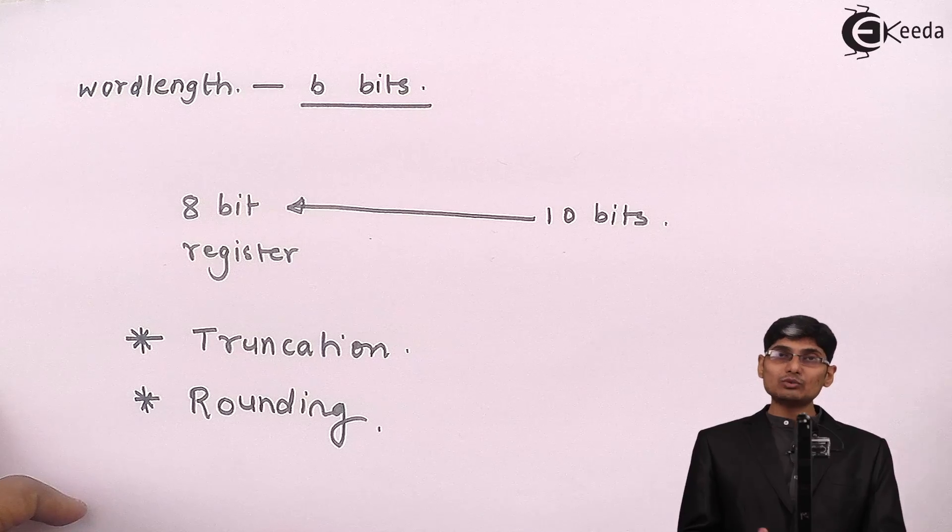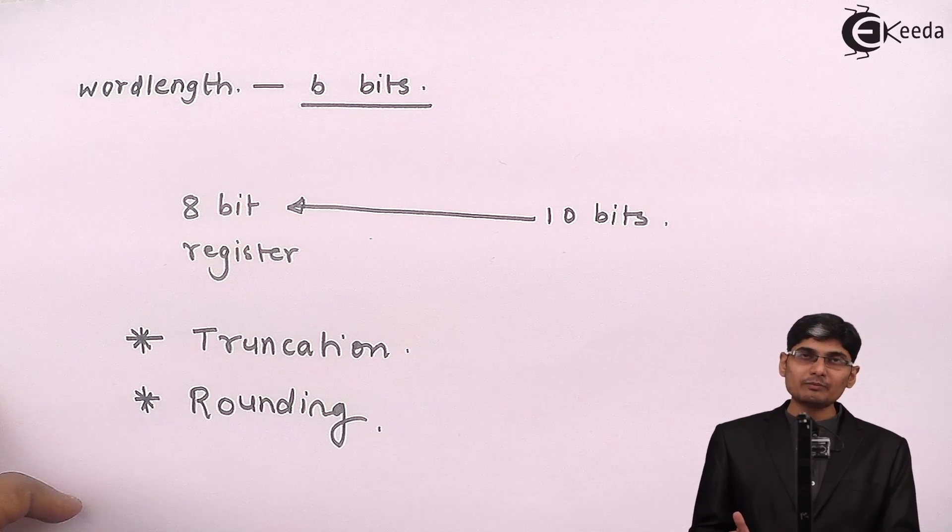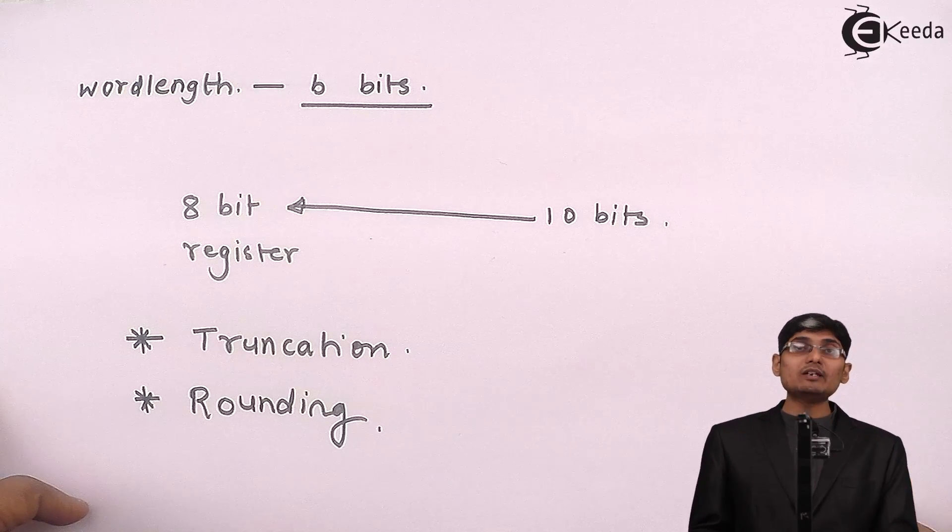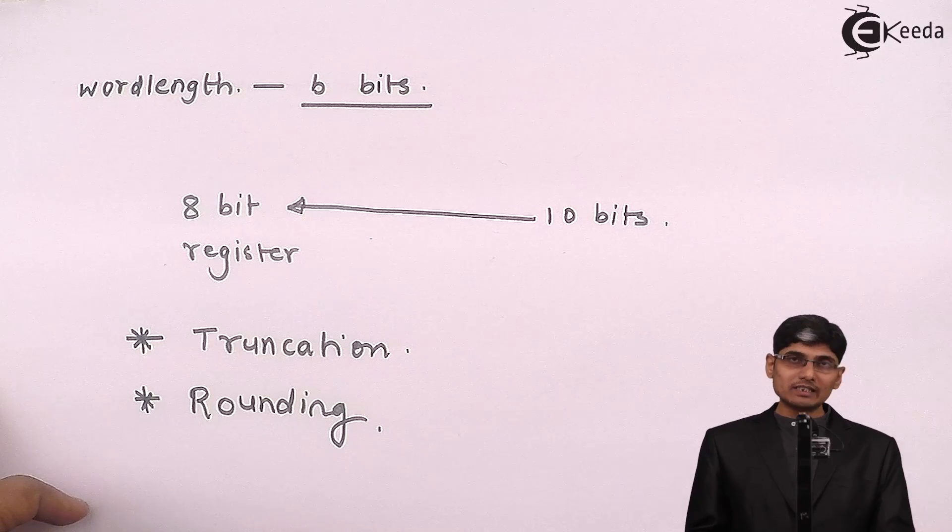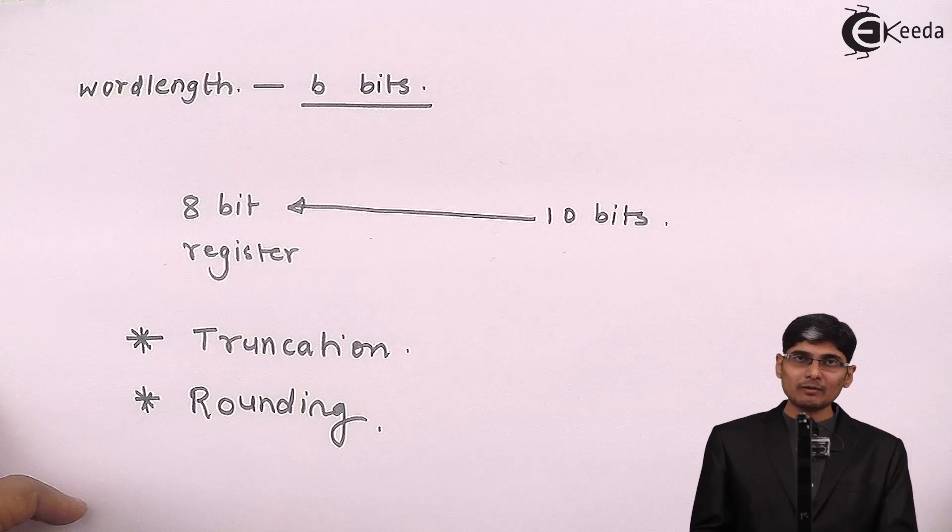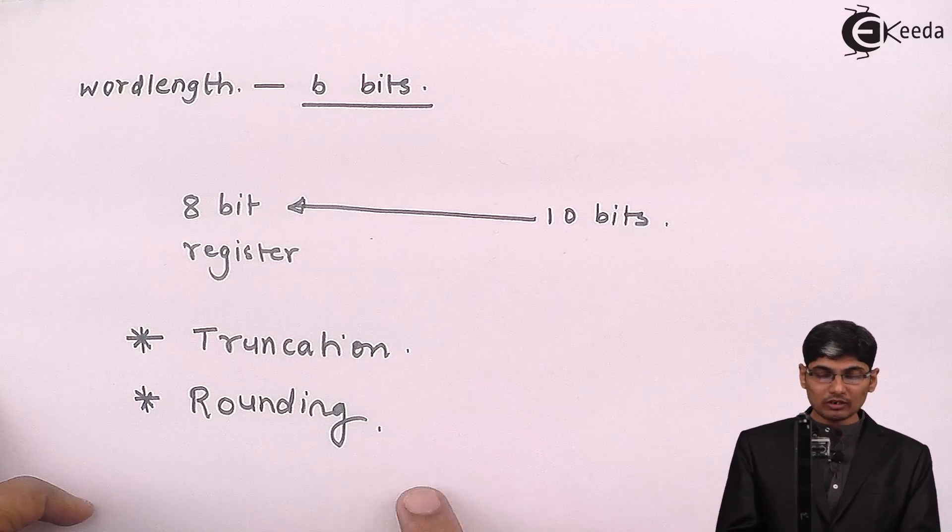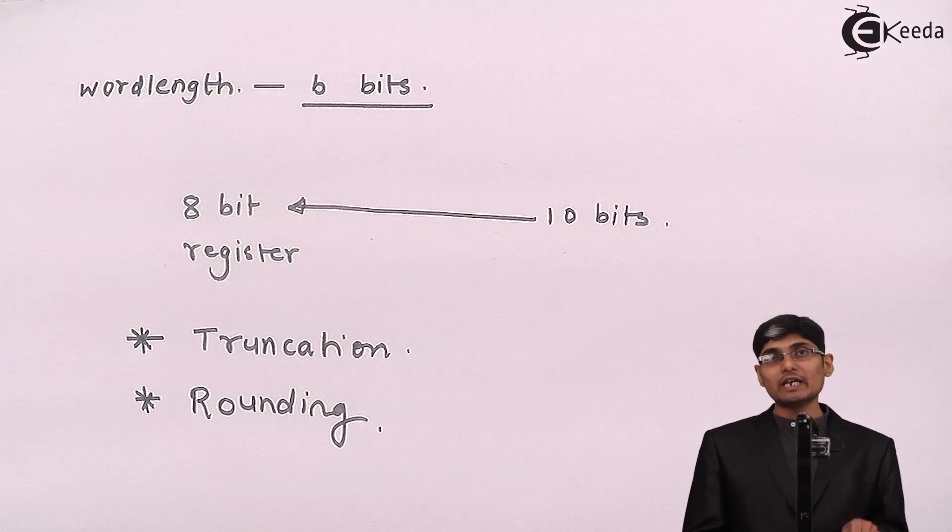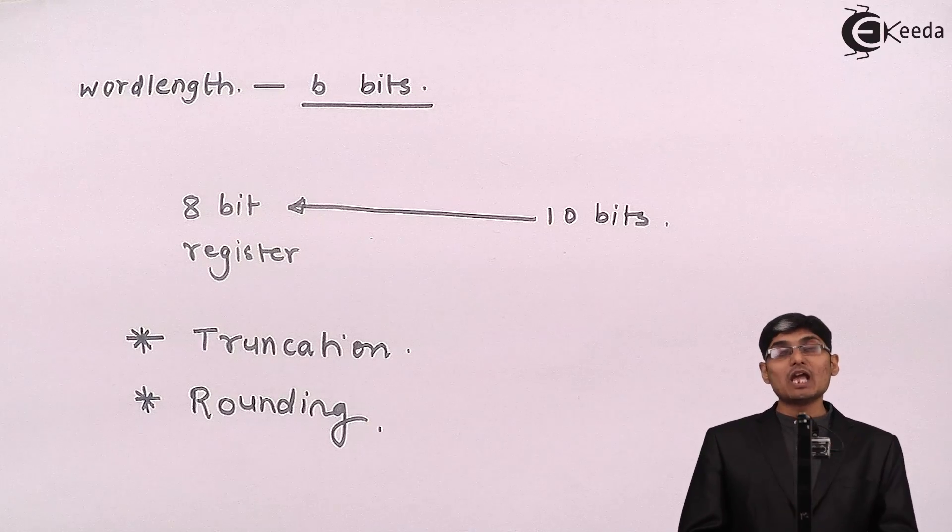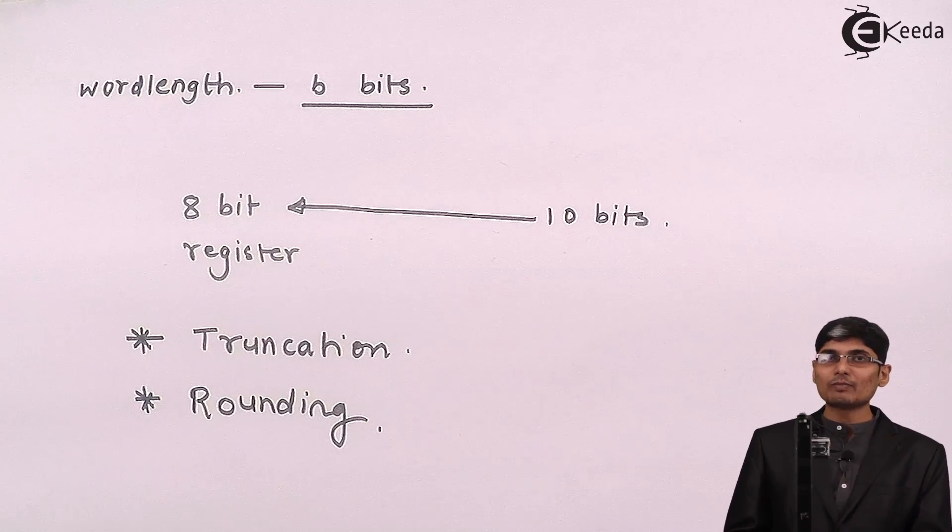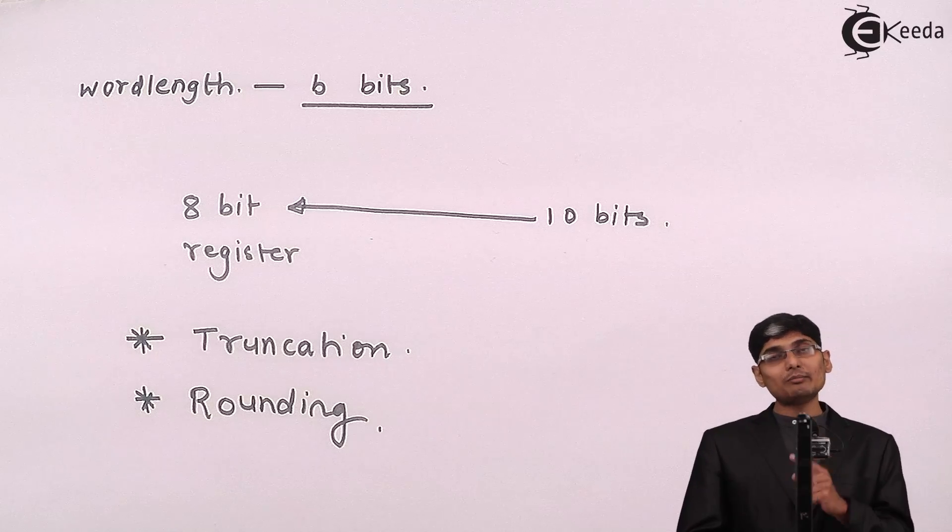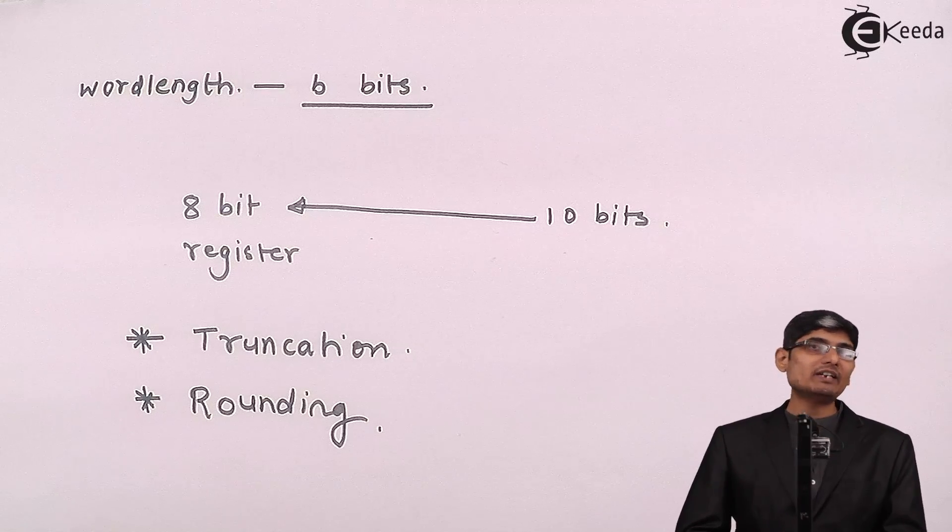Now after using truncation or rounding, what is the effect on the design of a digital filter that we have to consider? Because if I am truncating or rounding a number, its value will be changed and with this changed value, what will be the effect on my designed parameters of a DSP.